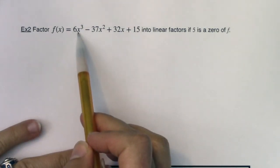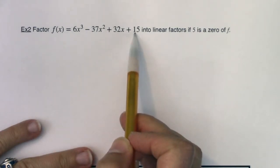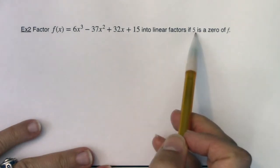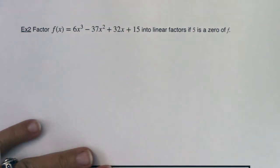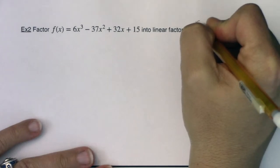We're going to factor 6x³ - 37x² + 32x + 15 into linear factors if 5 is a zero of the function. Now I want to just take note that I'm giving you a starting point here.